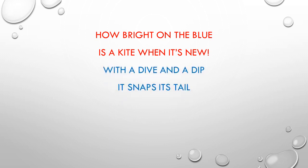'With a dive and a dip, it snaps its tail.' The kite moves and snaps means it moves its tail with the movement of dive and dip. It means with the downward and upward motions of the kite, the string of the kite moves in the sky.